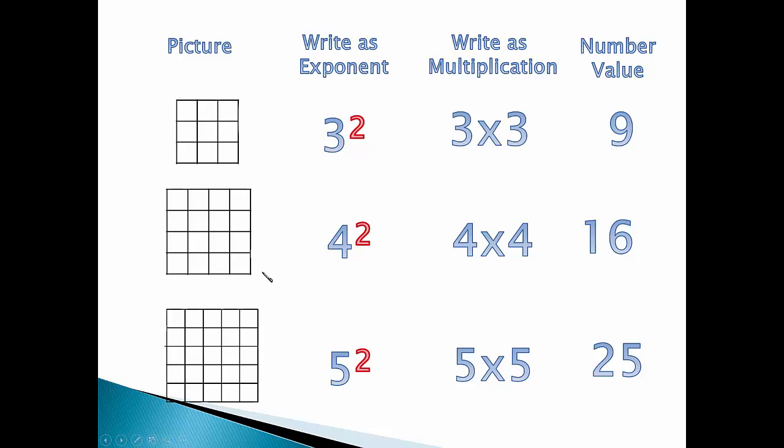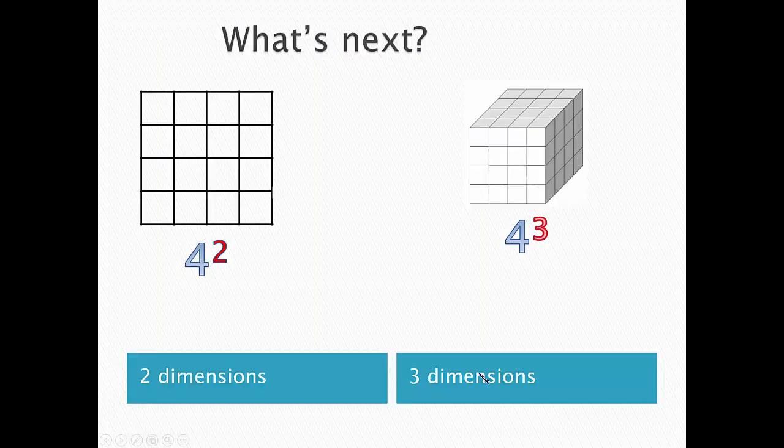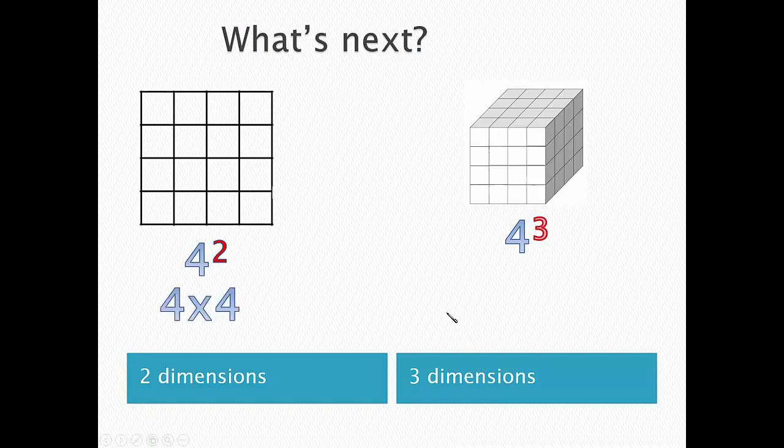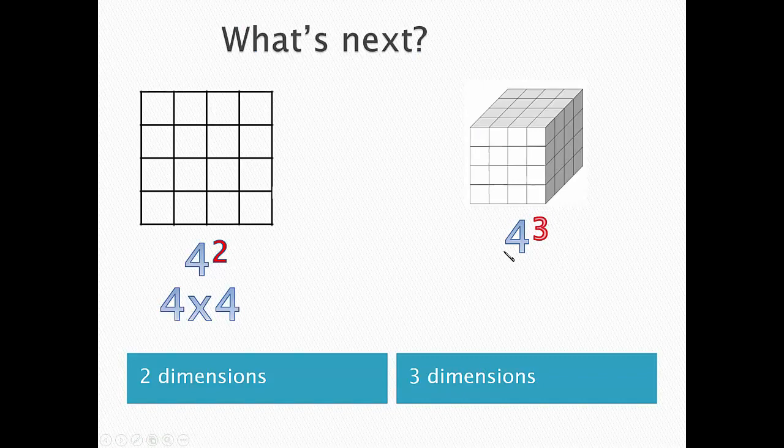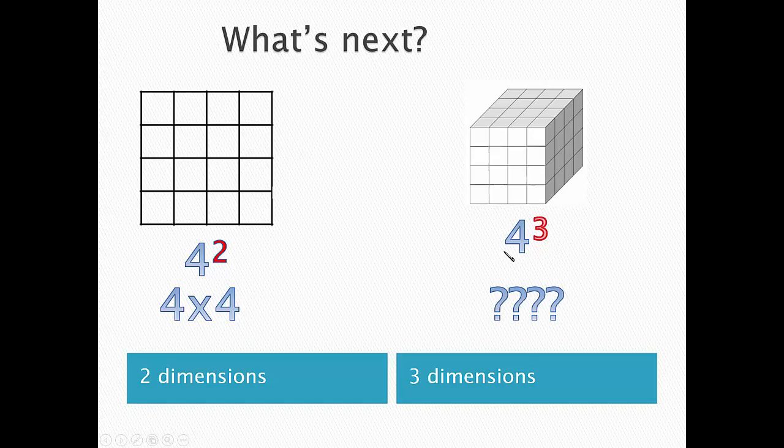The 2 stands for the two dimensions. There's no 2 in any of these examples. So what's next? 4 squared is 4 times 4. What would 4 to the third power be?